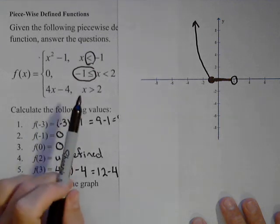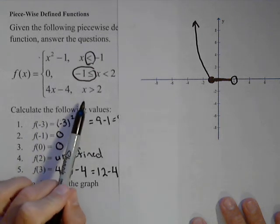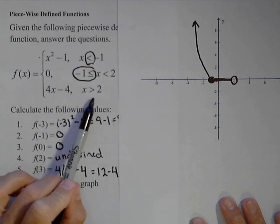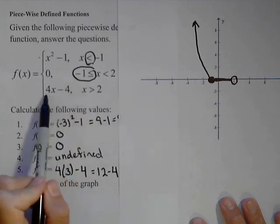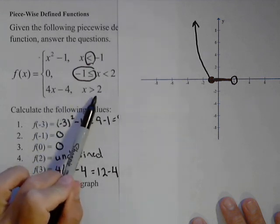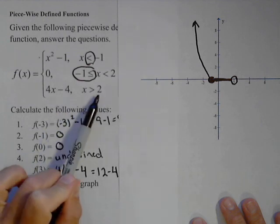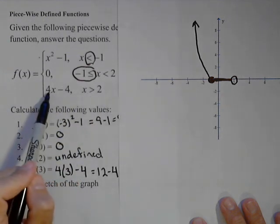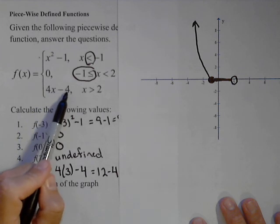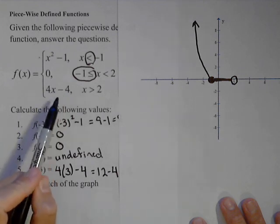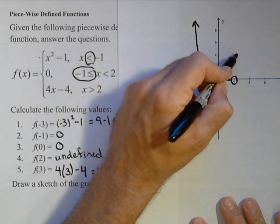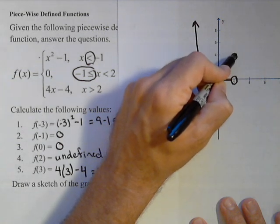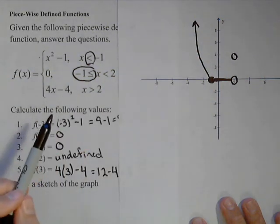Okay, now we'll go to our last piece. Remember, this thing is undefined at two. And the first thing we want to do is figure out where this piece is when x is equal to two, and we'll put an open circle there. When x is two, if I plug that in, I get four times two, which is eight, minus four. So two, four is where this thing is going to start. But again, it gets an open circle.